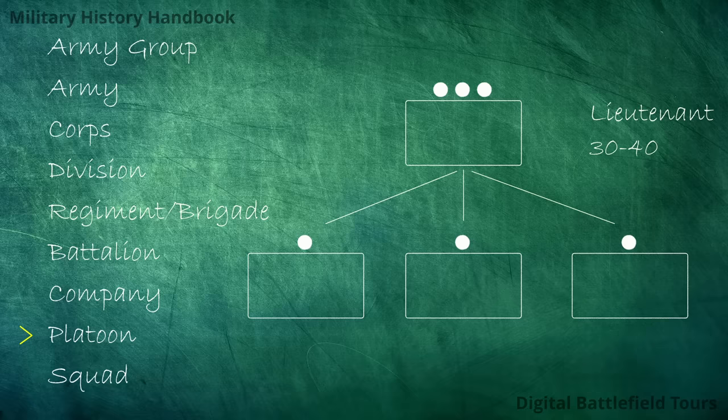The same is true for heavier infantry weapons such as machine guns, mortars, and anti-tank guns — they are often organized in platoons, usually ranging from four to six weapons. Again, the same command structure: a lieutenant in charge of the platoon, and every one of those weapons having a crew with a non-commissioned officer.